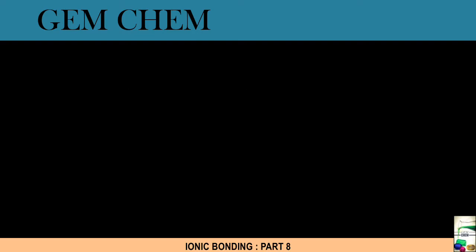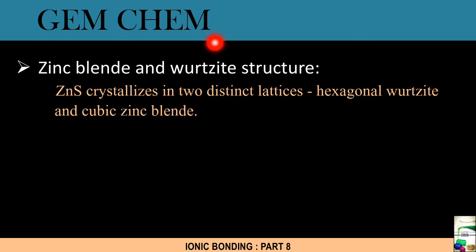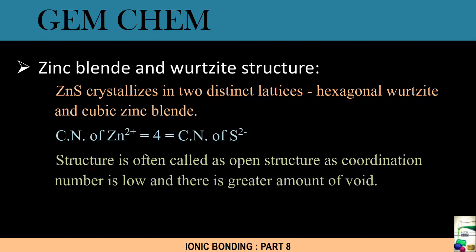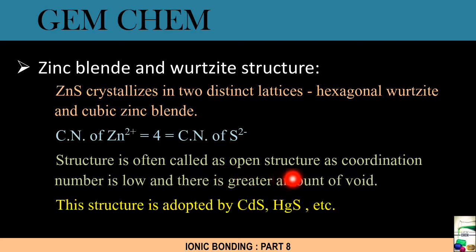The next one is zinc blend and wurtzite structure. This is very important. ZnS actually crystallizes in both of these two distinct structures, where ZnS structure is cubic in nature whereas wurtzite structure is hexagonal in nature, and these cations and anions actually occupy the tetrahedral holes. The coordination number, if you observe, is 4 for both cations and anions. If you see here, this coordination number is much lower, as a result of which there is much structured voids present in it. There is more space, so this structure is known as open structure. The structure is often called an open structure as coordination number is low and there is greater amount of void space. Other examples of these structures are cadmium sulfide and mercuric sulfide.